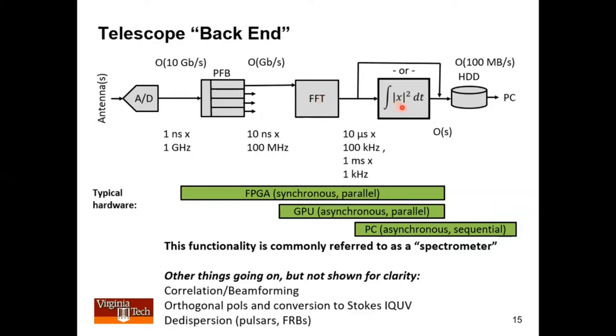You might do the detection there. This is where the power averaging would happen on the FFT channels at this rate. Or in some applications we try to save the whole thing.